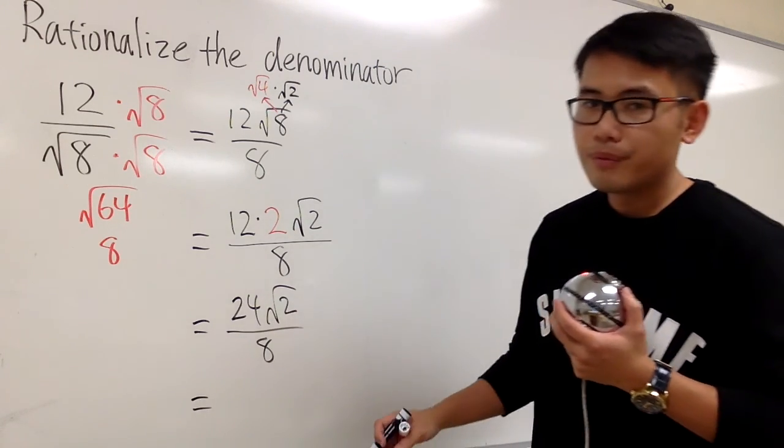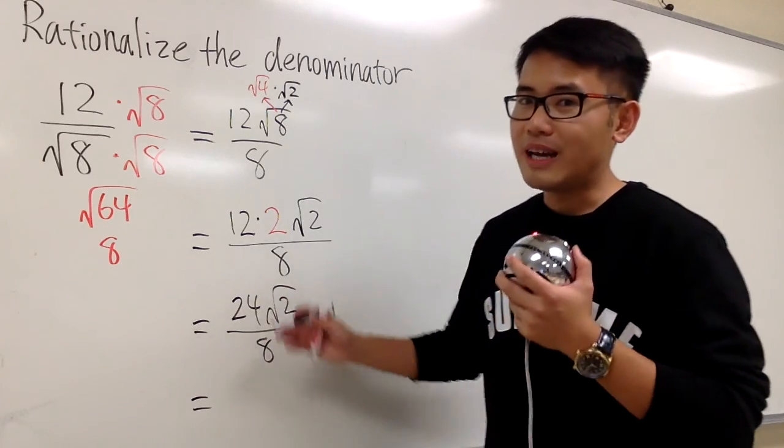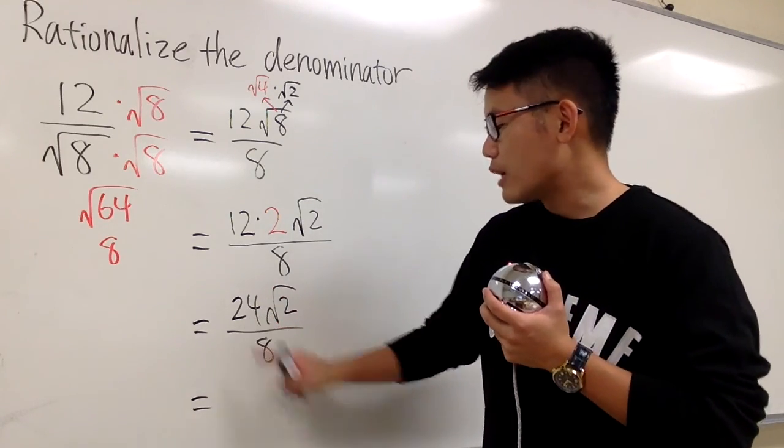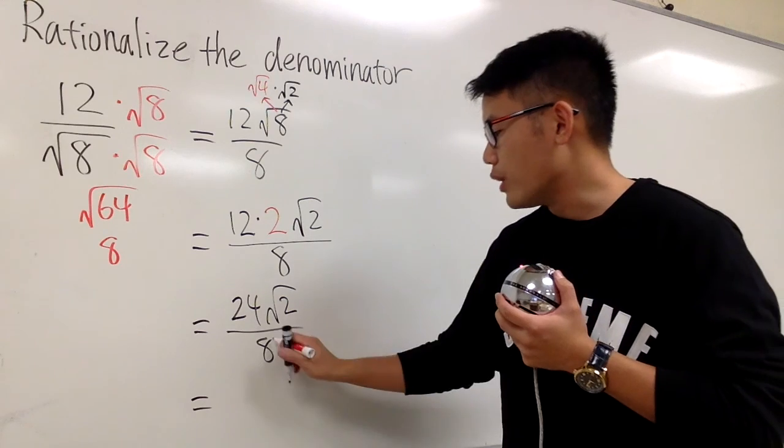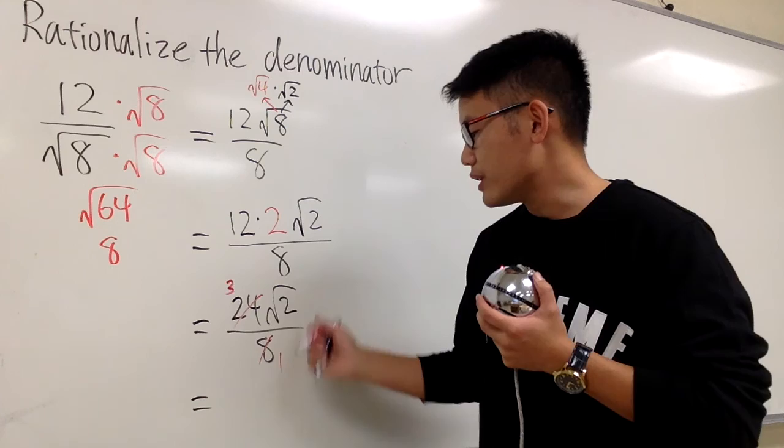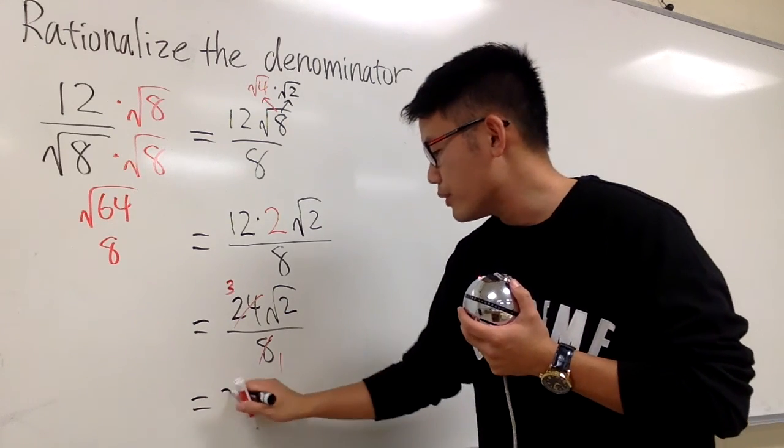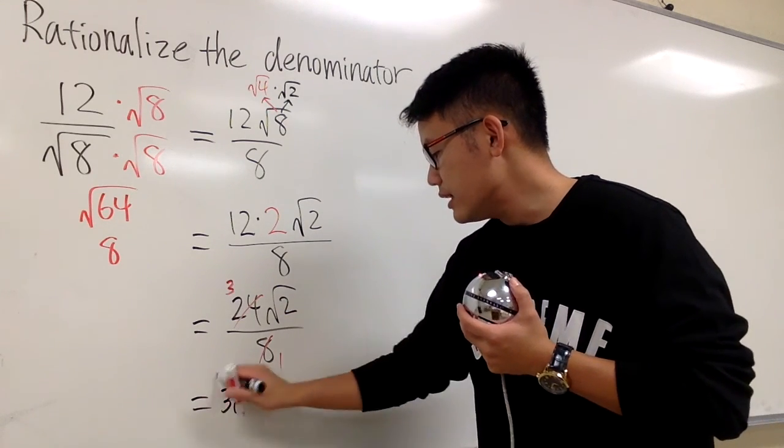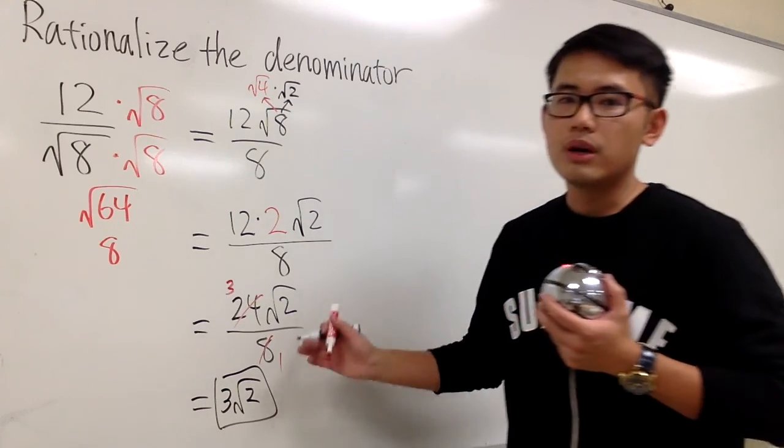And then remember, we can simplify the outside numbers, right? 24 is outside, and then also the 8 is outside. We know 8 goes into 8 one time. 24. 8 goes into 24. So, all together, we have 3 square root of 2, all over 1. So, this is it. 3 square root of 2.